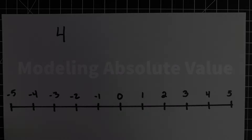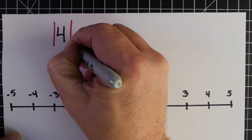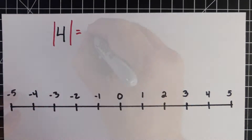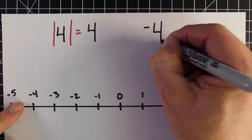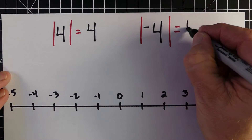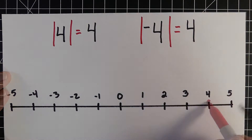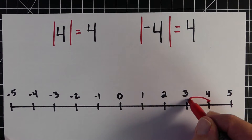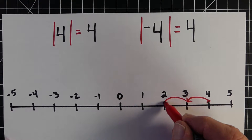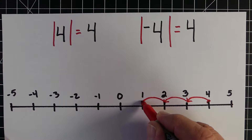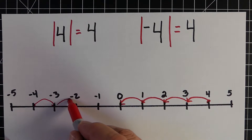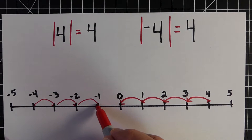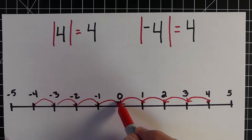When we go to model absolute value, one of the best ways to model it is using a number line. For example, the absolute value of four is a positive four. For the absolute value of negative four, it also has an absolute value of four. So for your modeling on the number line, you would start with the positive four and show that you would move four places to get to zero. And the same thing would happen with the negative four — you would move four times and eventually end up at zero.